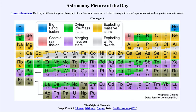Lower mass stars can create some elements too, shown in green. In fact, a lot of the carbon and nitrogen that we have was created in this way.